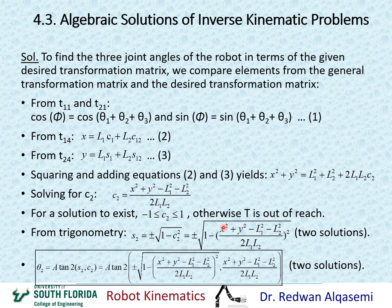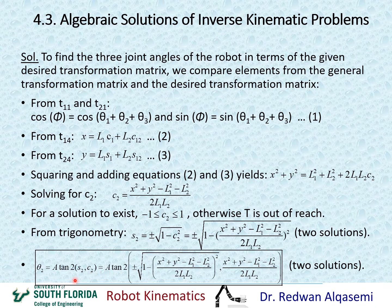Now that we have both sine and cosine, we use atan2(sin(theta2), cos(theta2)) to find theta2. Cosine theta2 has one value, but sine theta2 has two values (plus and minus). Running the atan2 equation twice — once with a positive sign and once with a negative sign — yields two solutions: theta2 solution one and theta2 solution two, both valid.